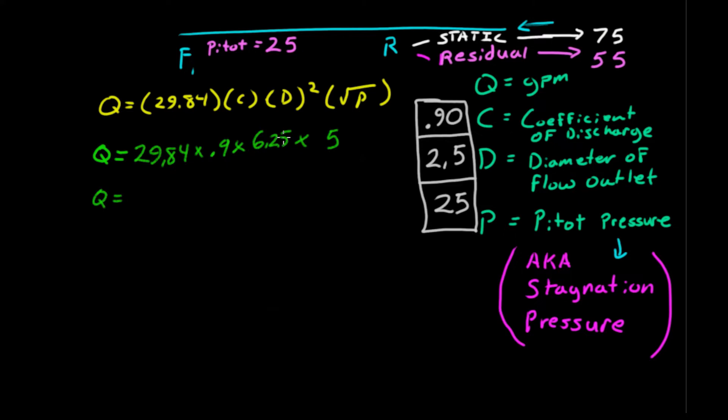So go ahead, do your multiplication. You should get 839.53 gallons a minute, maybe some decimal places. You could round that to 840 if you wanted to.